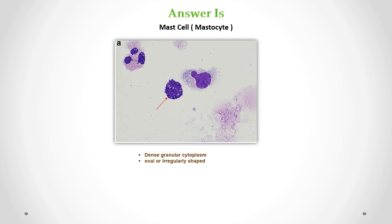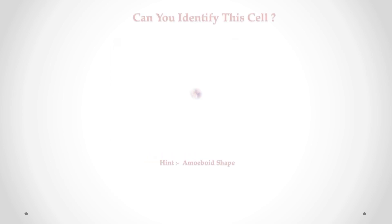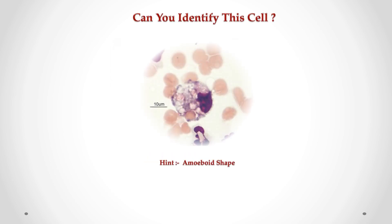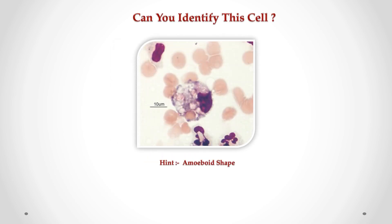Correct answer is mast cell, also called mastocyte. We can see dense granular cytoplasm and an oval or irregularly shaped cell. Can you identify these cells in CSF?